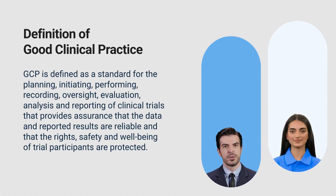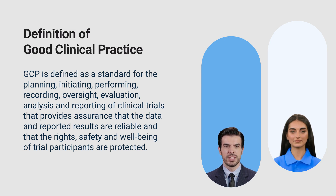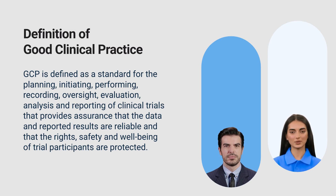One of the significant updates is the refined definition of good clinical practice. From the glossary in the new document, GCP is defined as a standard for the planning, initiating, performing, recording, oversight, evaluation, analysis, and reporting of clinical trials that provides assurance that the data and reported results are reliable and that the rights, safety, and well-being of trial participants are protected. The updated definition in ICH E6 R3 reflects a comprehensive approach to GCP, emphasizing mandatory compliance, data integrity, and the protection of participants throughout the entire trial process.